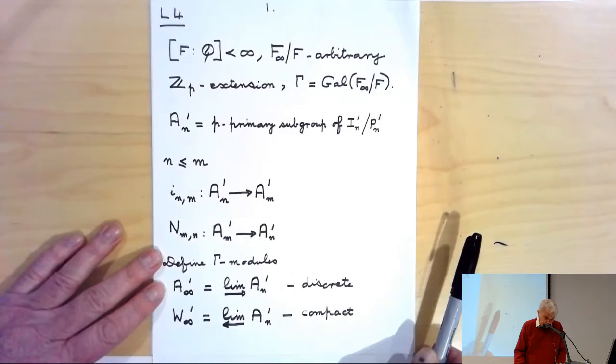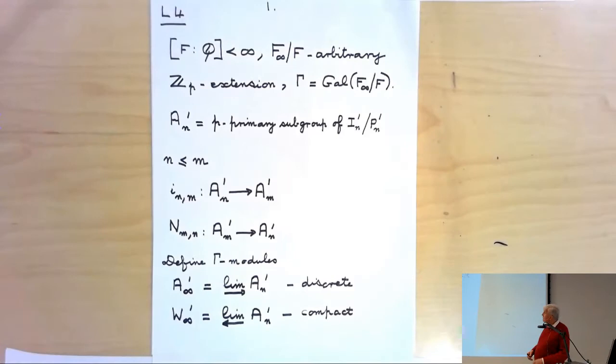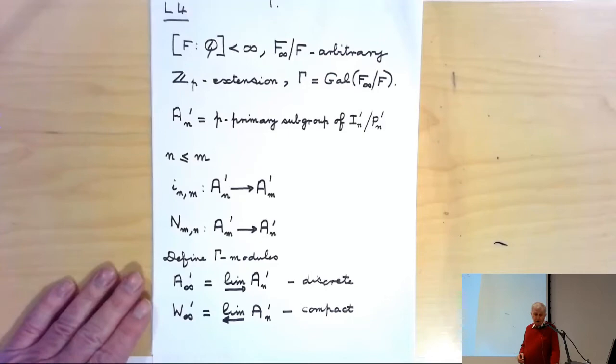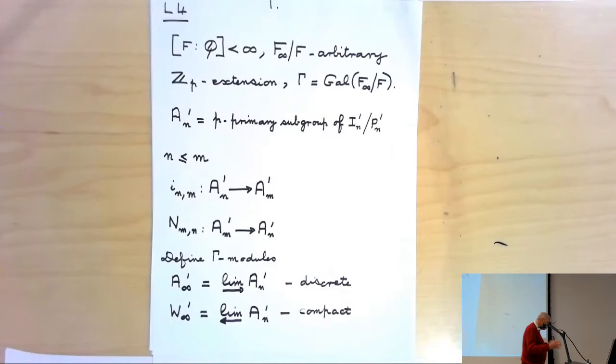In the usual notation, γ is the Galois group of F∞ over F, and Fn will be the nth layer. As in the past, An' will be the P-subgroup of the class group mod primes above P. The prime indicates that we always throw away all the ideals dividing P, whether they're ramified or not, because it needn't be that every prime above P is totally ramified in this extension — I don't need that assumption at all.